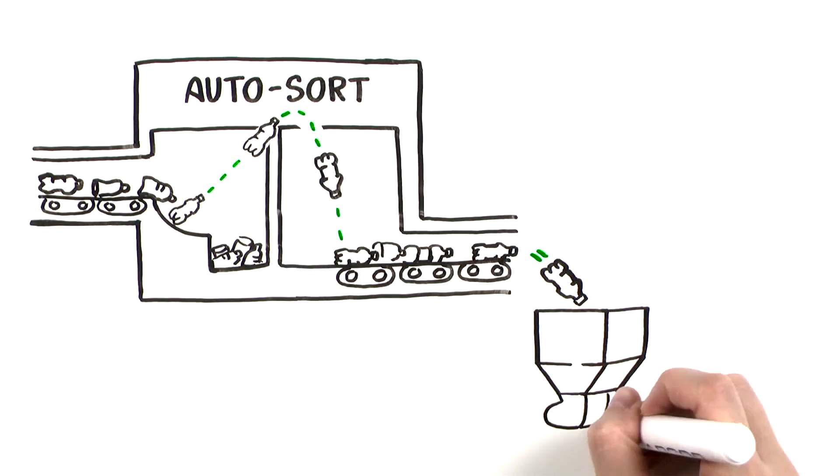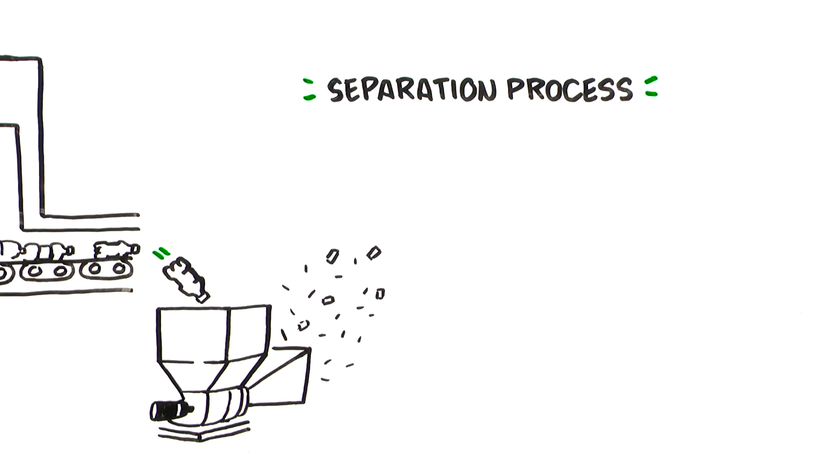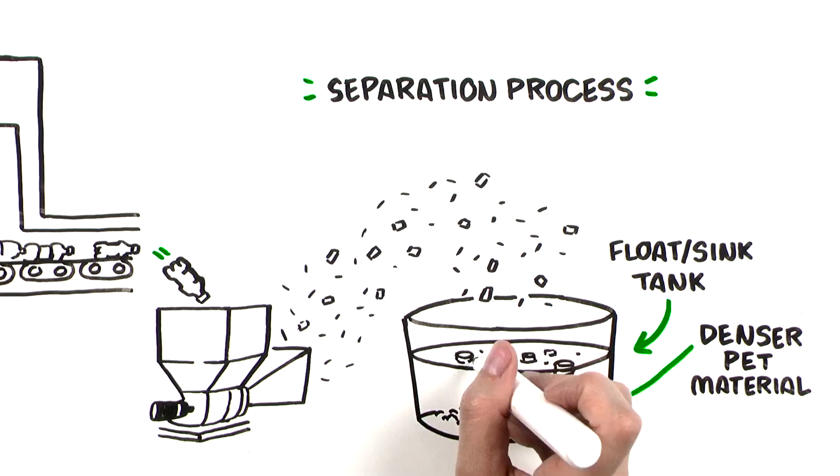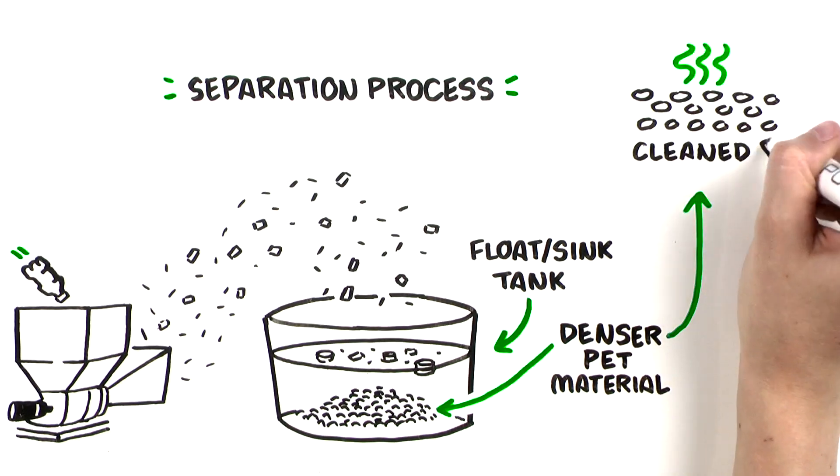The PET is then ground and put through a separation process, often a float sink tank. The denser PET material sinks. It's separated from the floating cap and label material, then cleaned and dried.